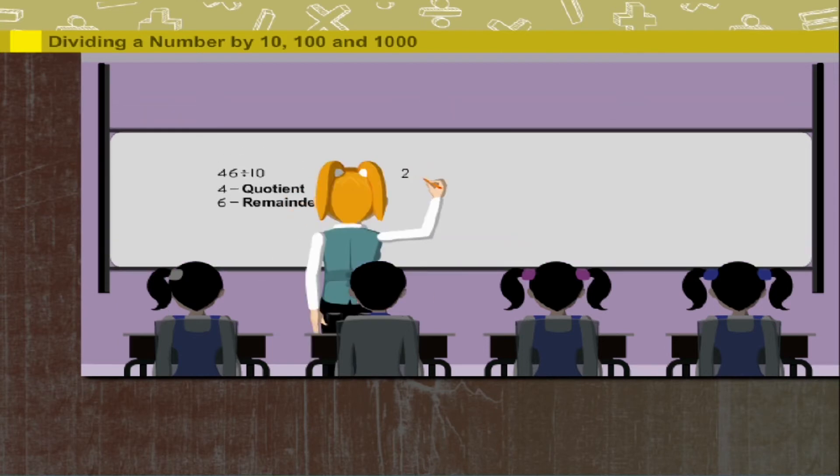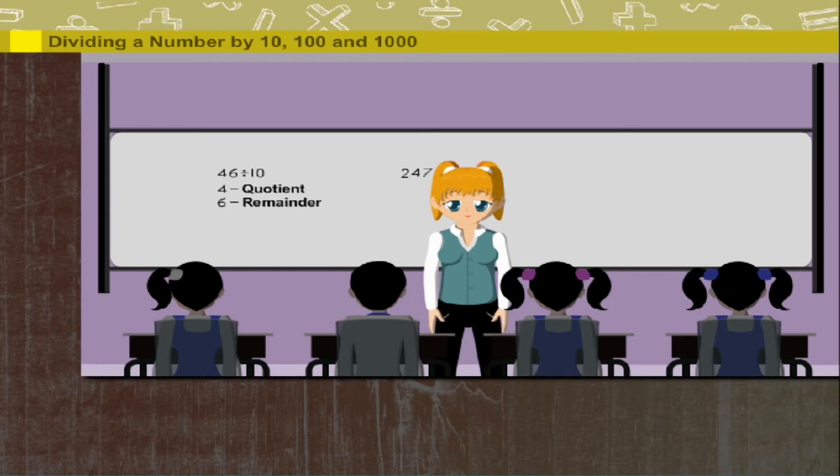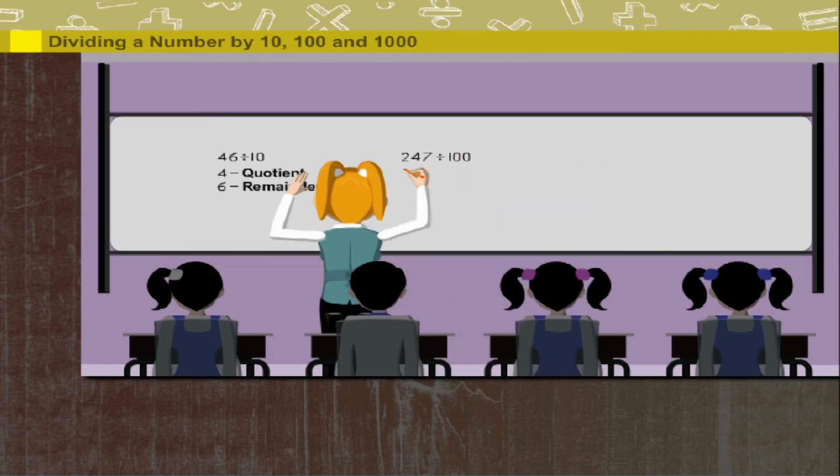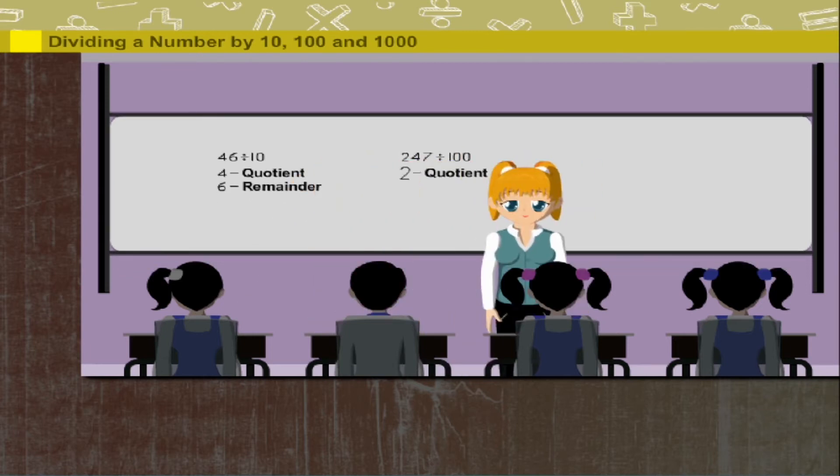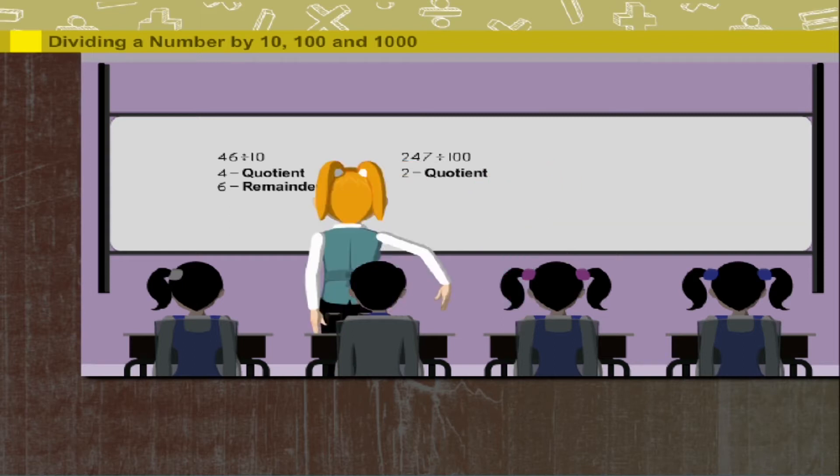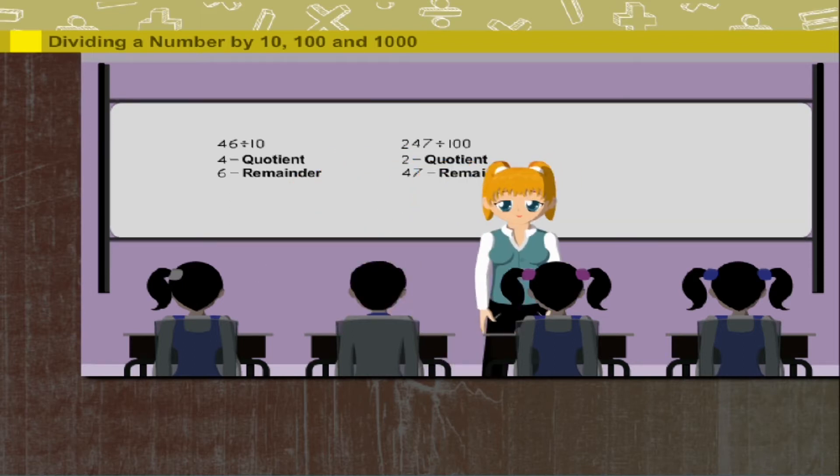Easy. Now, it's 247 divided by 100. Here also 2 is the quotient and 47 is the remainder.